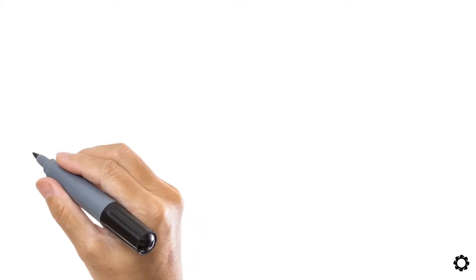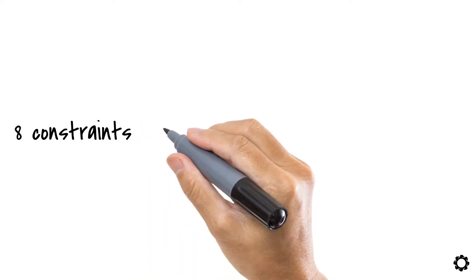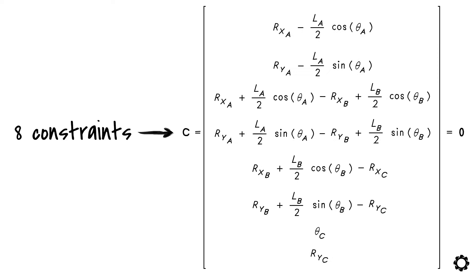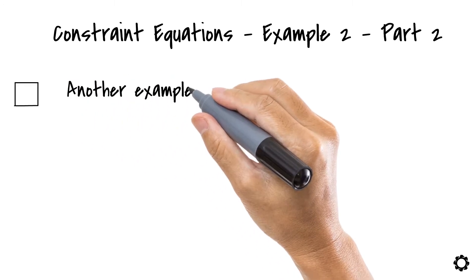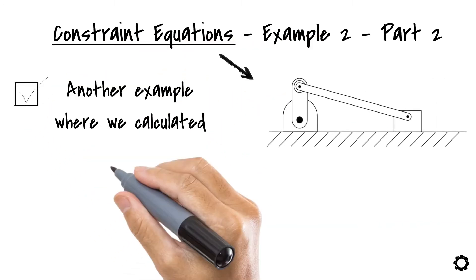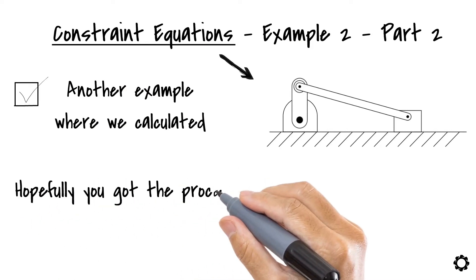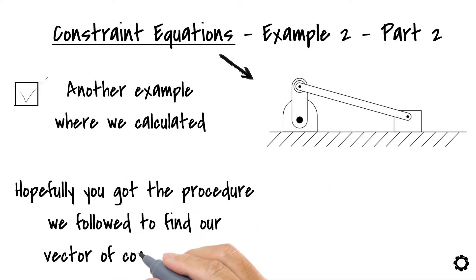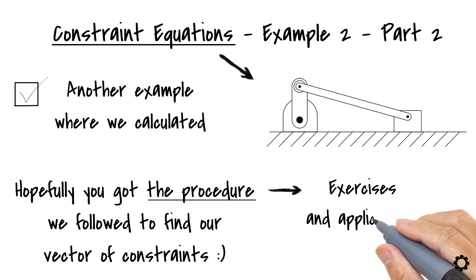We have eight constraints. We can collect them in a vector of constraints as follows. In this lesson, we had another example where we calculated the constraint equations for a mechanical system. Hopefully you got the procedure we followed to find our vector of constraints. You can use it from now on in your exercises and applications.